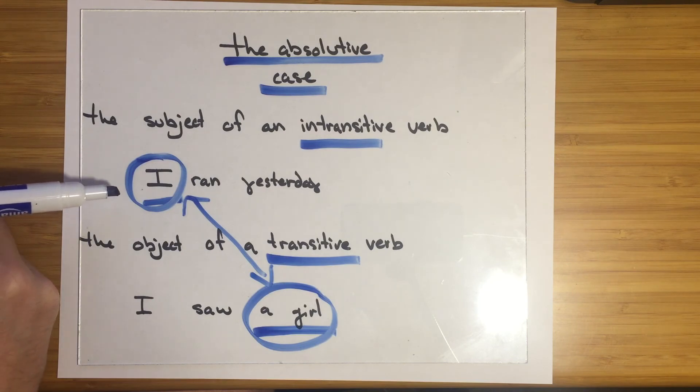And if you saw a girl, the girl isn't acting on anything else. So it's being in the position of not being active on another object. That kind of links the two.